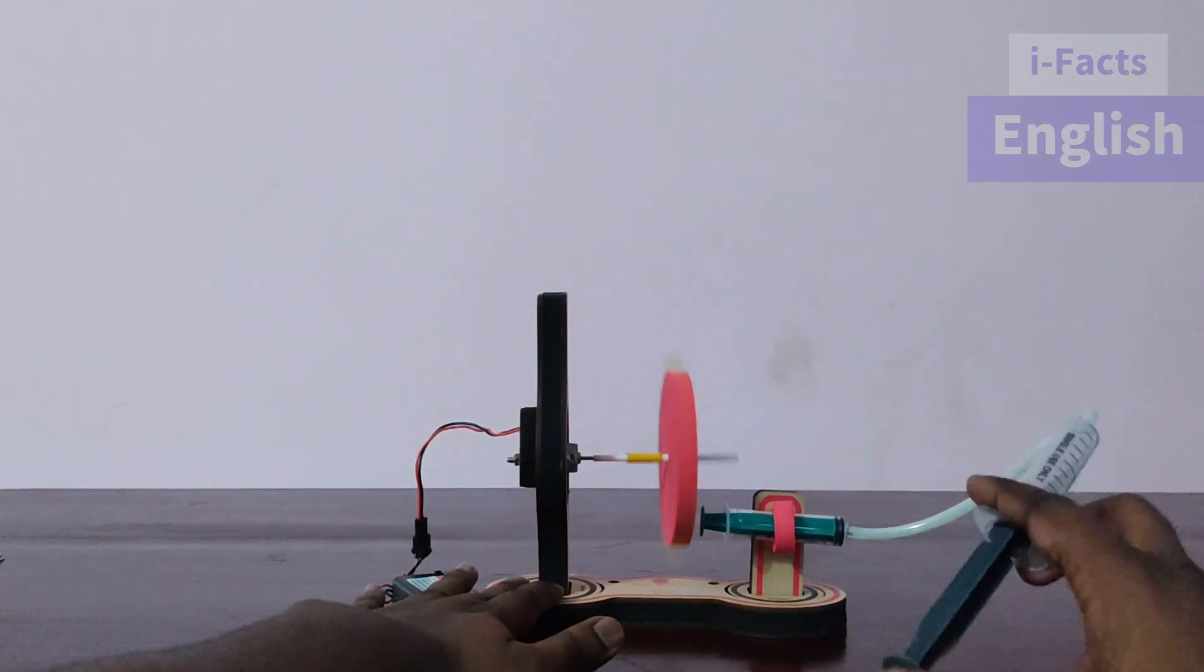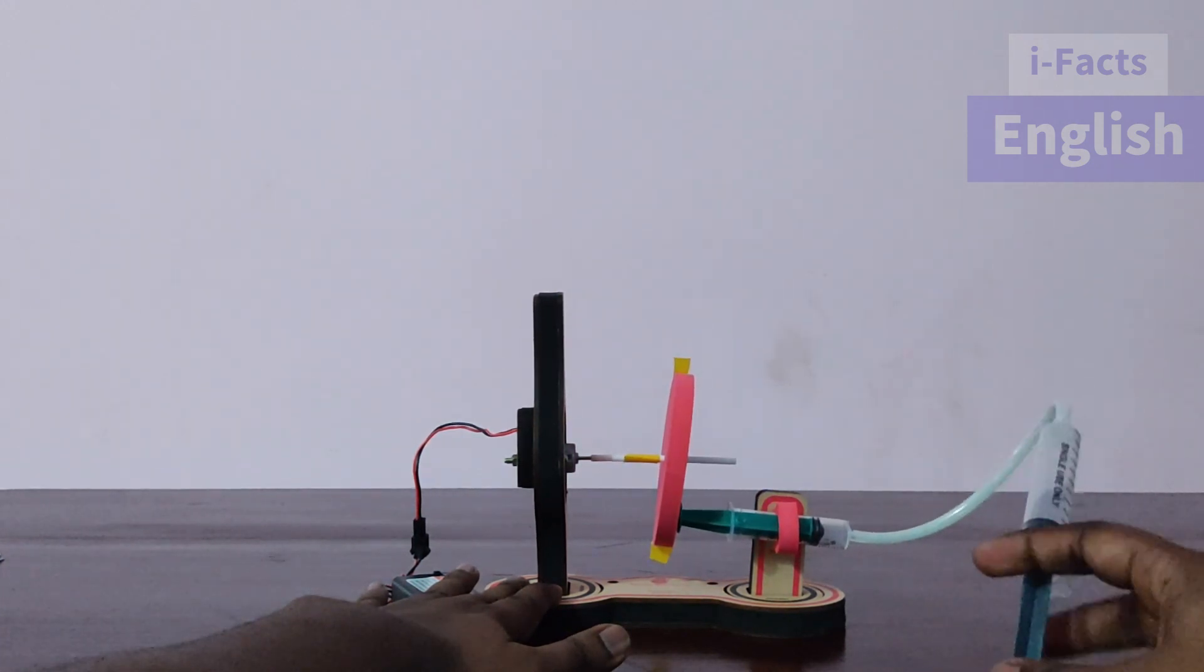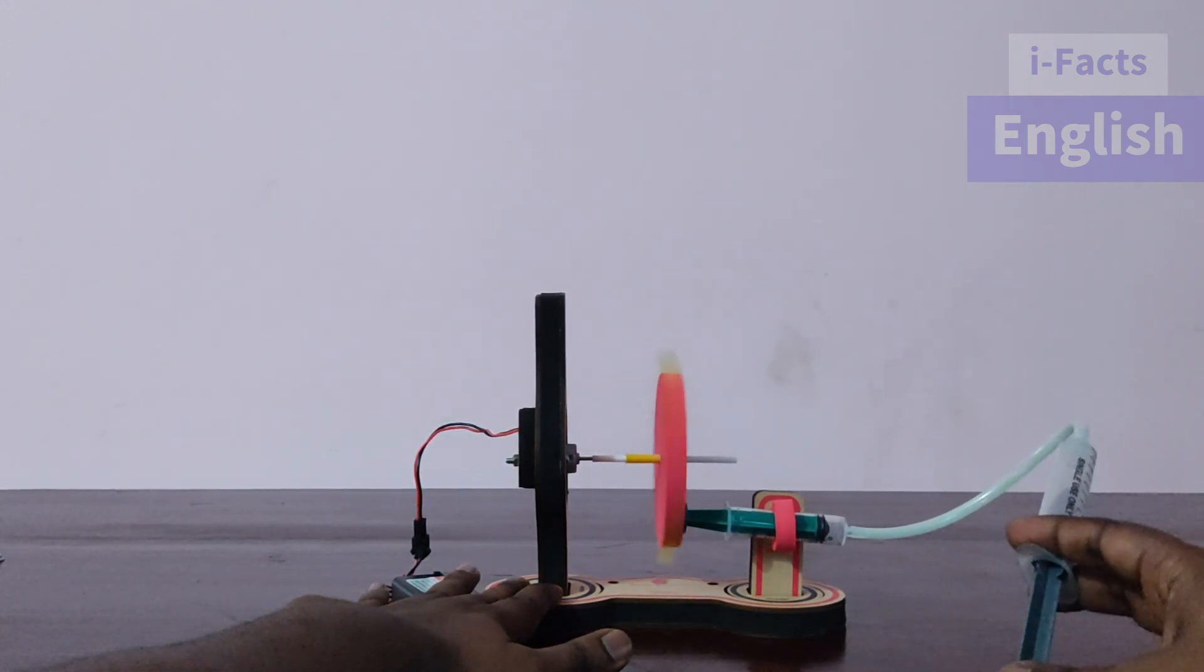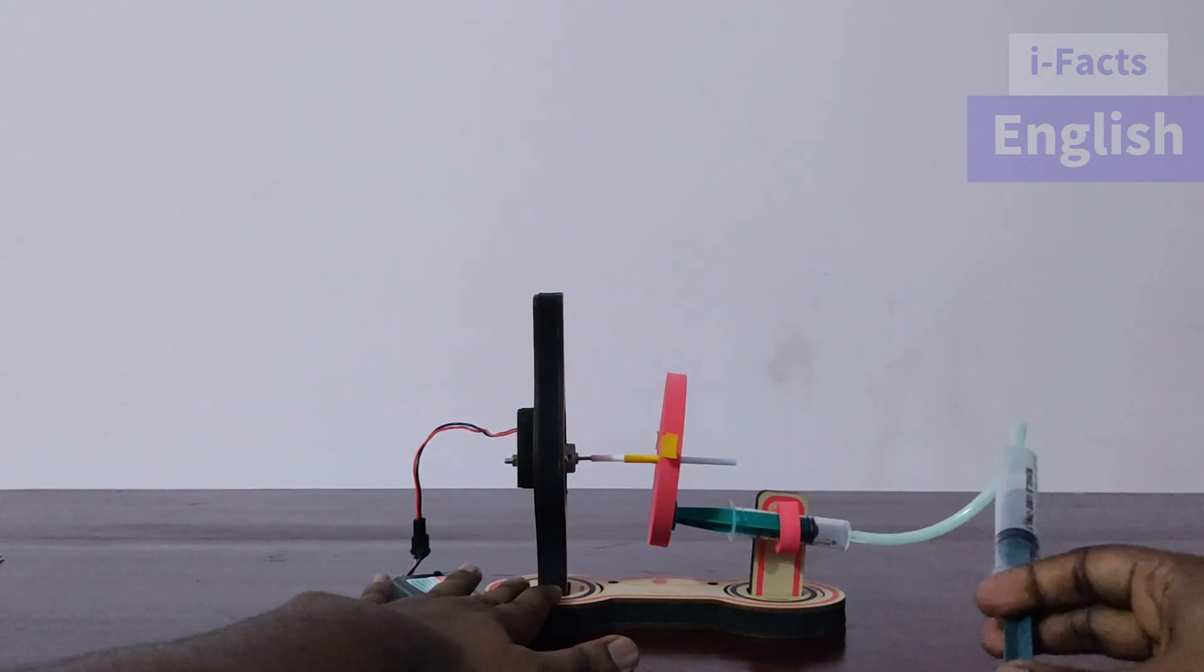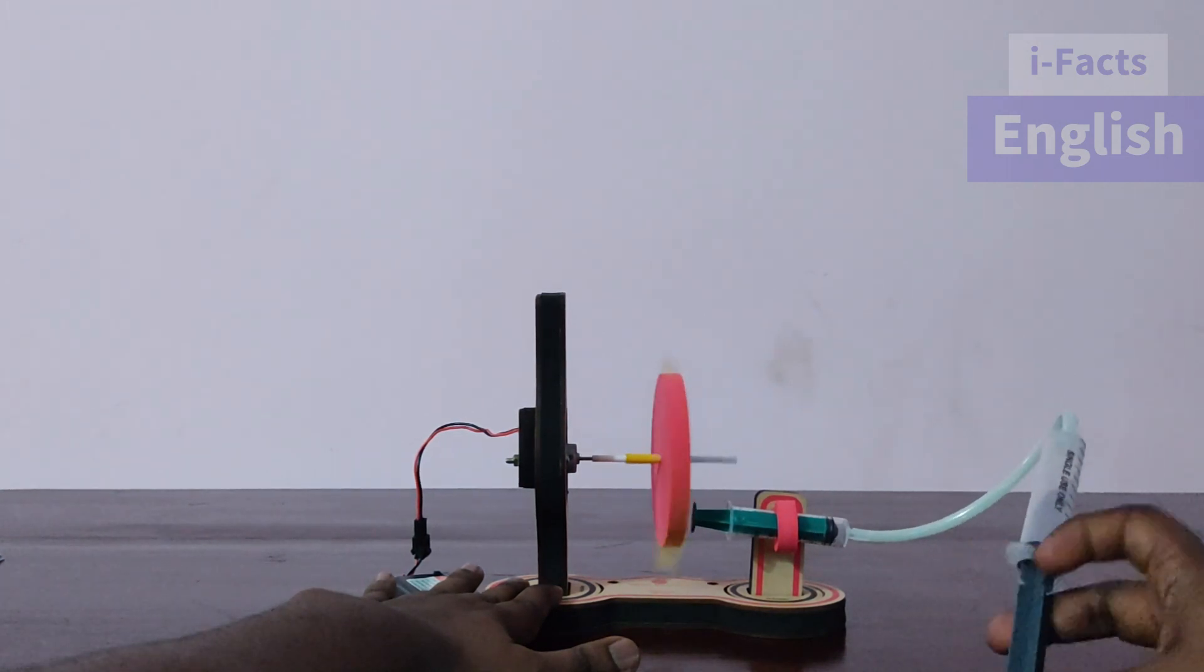You can see the syringe is hitting the wheel and the wheel stops rotating. This is how the hydraulic braking system works.